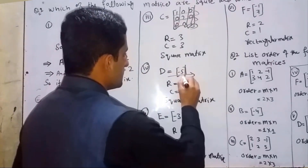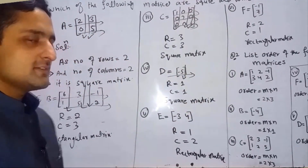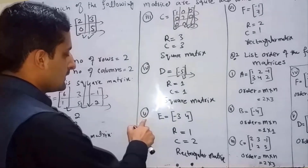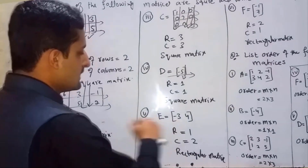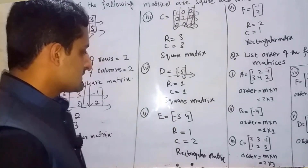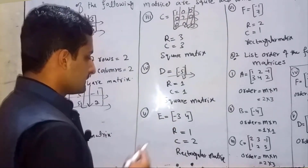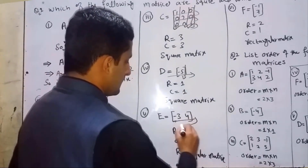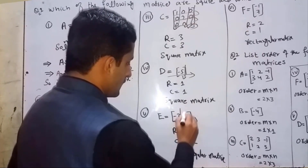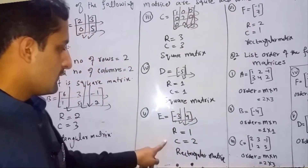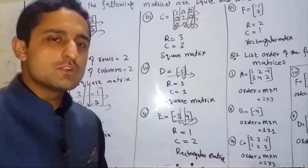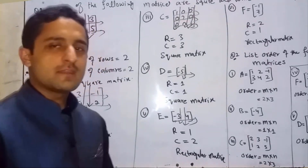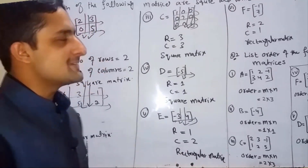Part e: E = [-3, 4]. Number of rows = 1, number of columns = 2. Number of rows is not equal to number of columns — that is a rectangular matrix.